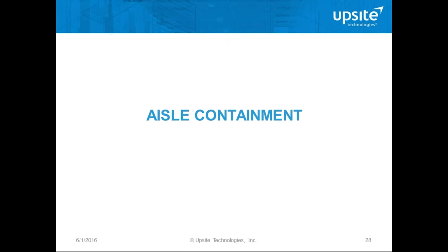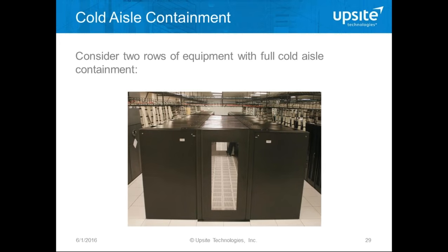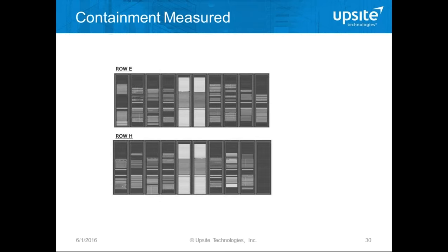Common practice nowadays is to install aisle containment — a really important feature of airflow management. Typically people install contained aisles with doors and a roof. Let's look at two rows in a single aisle in a simulation. In this data center, rows E and H have a variety of IT equipment installed, and this is a view of the front faces of the two rows in that aisle containment scenario.